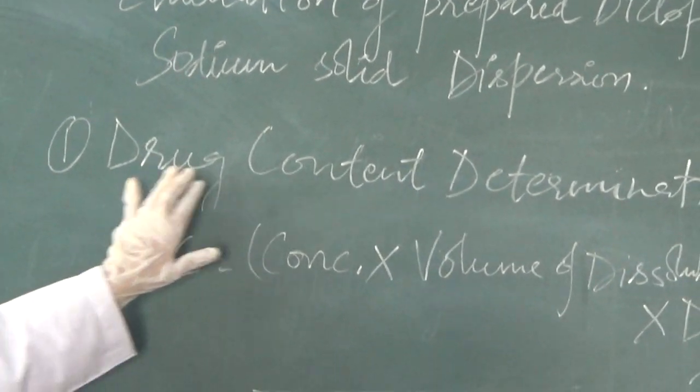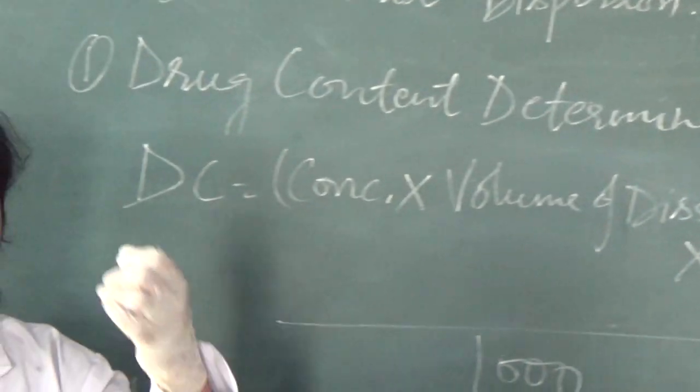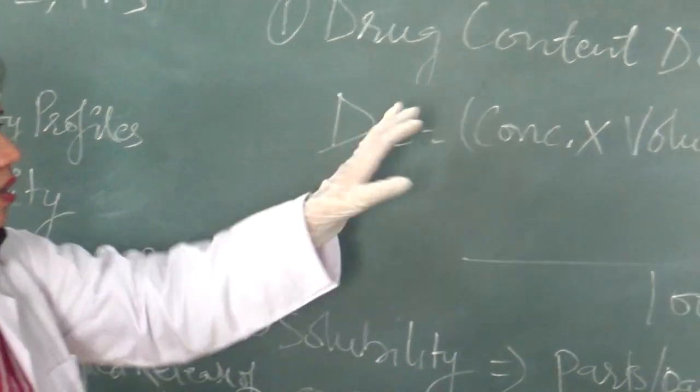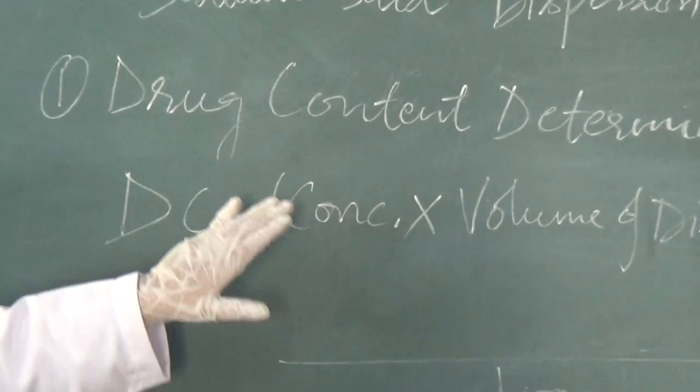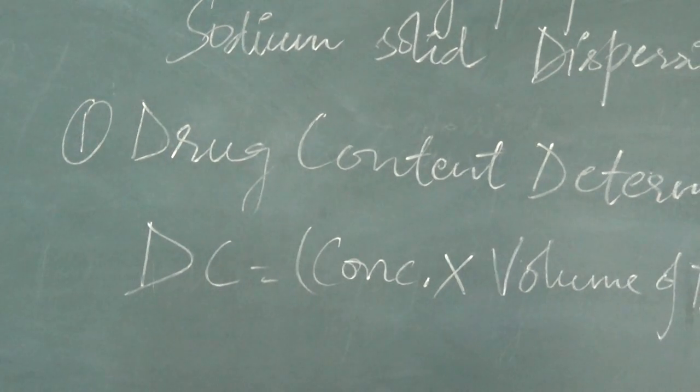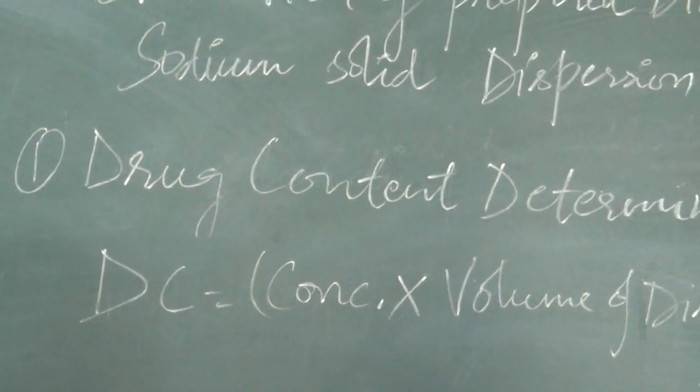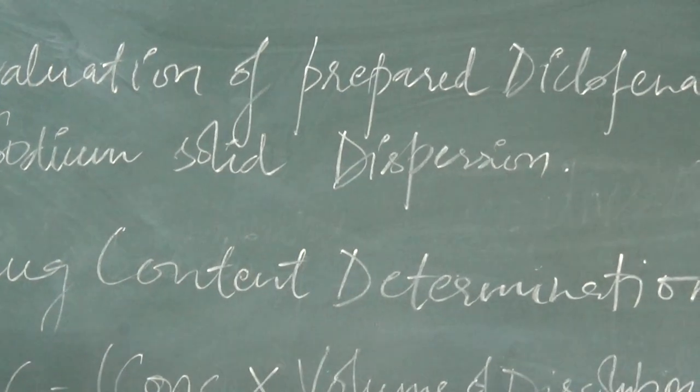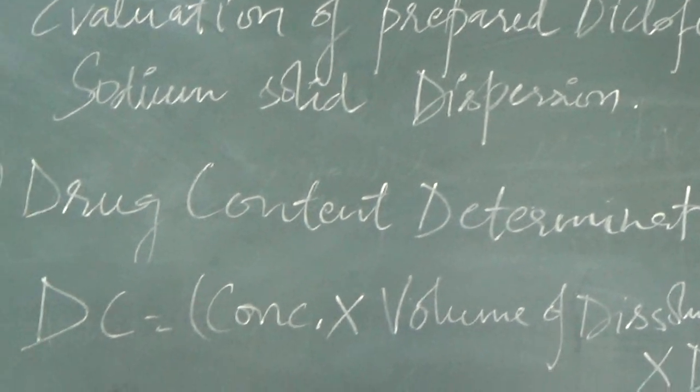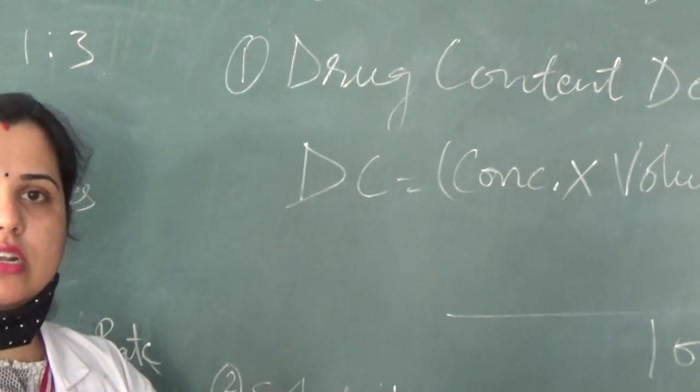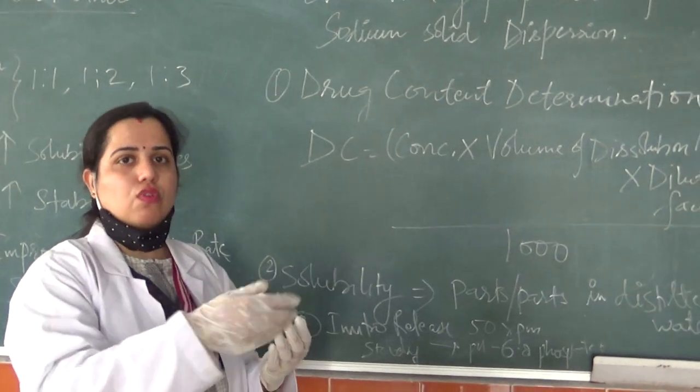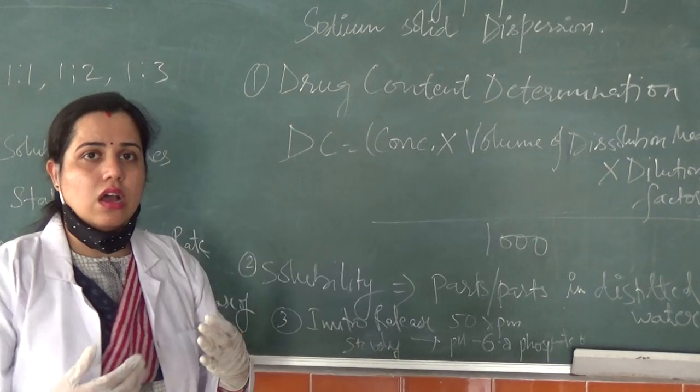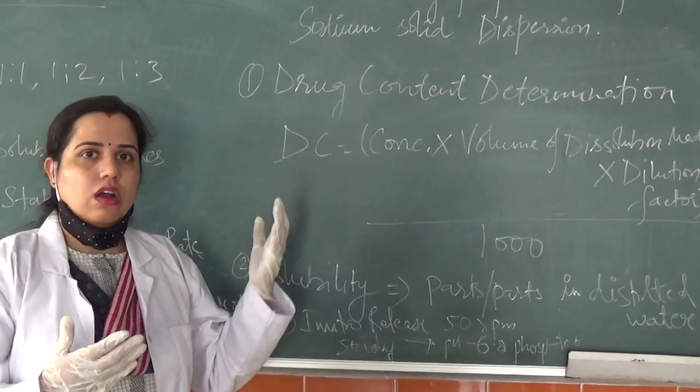Here is drug content determination - how much drug is retained in the dispersion system. We will do drug content determination by taking a weighed amount of solid dispersion and mixing it with phosphate buffer. Then we will filter it out and through UV spectrophotometric analysis, we can analyze the content present in the mixture.